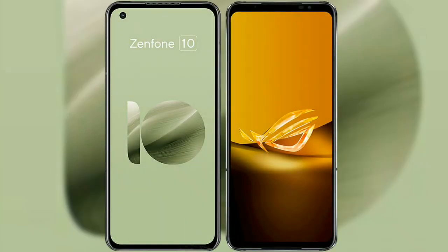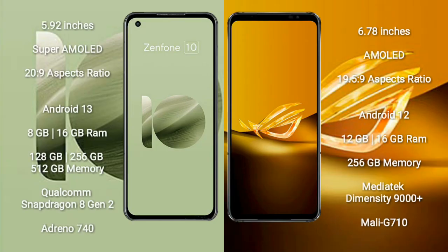I will compare the new Asus Zenfone 10 with the Asus ROG Phone 6D. The Asus Zenfone 10 comes with a 5.92-inch Super AMOLED display and a 20:9 aspect ratio. The Asus ROG Phone 6D comes with a 6.78-inch AMOLED display and a 19.5:9 aspect ratio.